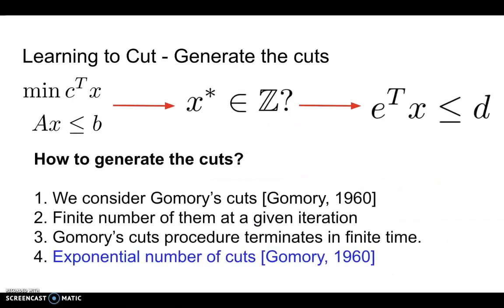And the question is, how do we generate such cuts from the LP as well as its optimal solution? In this work, we consider Gomory's cuts. It is shown that there are always a finite number of Gomory's cuts at a given iteration, which makes the learning much more tractable. And it has been theoretically shown that Gomory's cutting plane procedure terminates in finite time, which makes it desirable.